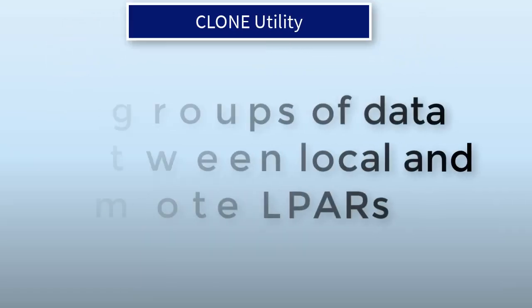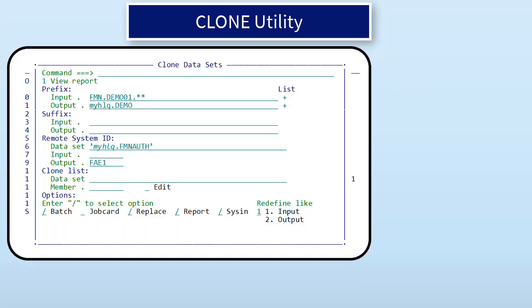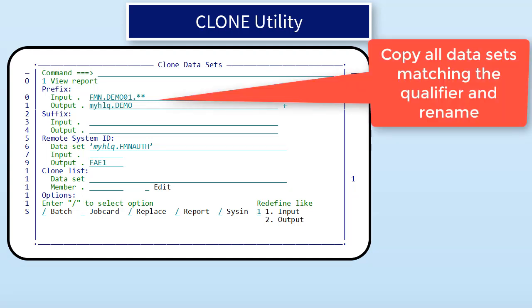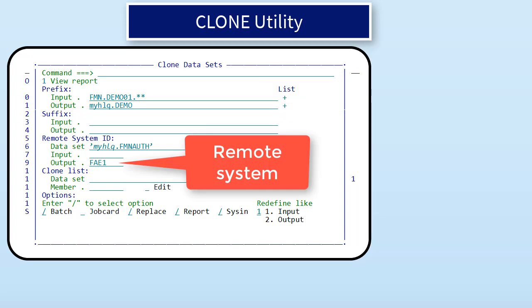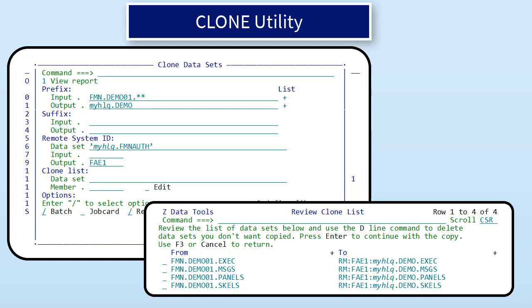The clone facility will copy groups of catalogued datasets to local and remote LPARs. For example, we can take all the datasets that have high-level qualifier fmn.demo01 and copy them to another LPAR, renaming them to a new high-level qualifier. The remote definition FAE1 specifies the destination system. If it wasn't already defined, the tool would display a definition dialog. Hitting Enter brings up a clone list from which we can perform the copy. The output datasets will be created if they don't already exist.